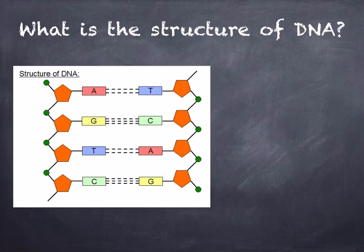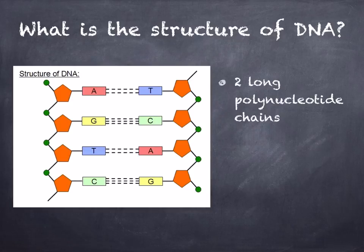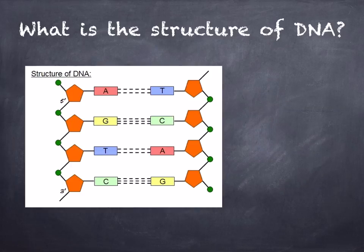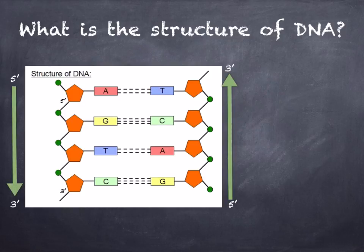So what is the structure of DNA? DNA comprises two long polynucleotide chains. These are anti-parallel, meaning they run in opposite directions, and they are held together by hydrogen bonds. Looking at the diagram, one chain on the left runs 5' to 3' downwards, whilst on the other chain the 5' to 3' direction runs upwards — they are anti-parallel. Also notice how the pentose sugars are drawn in opposite directions to one another.